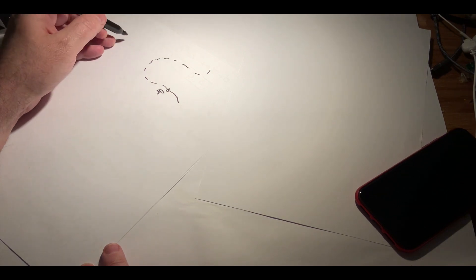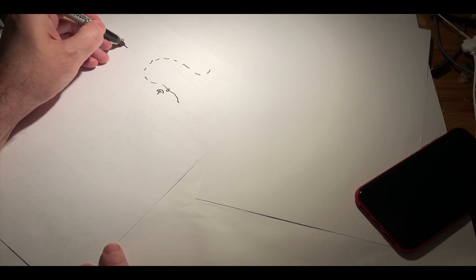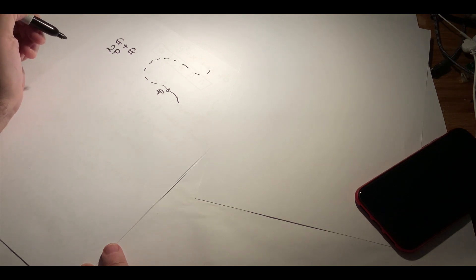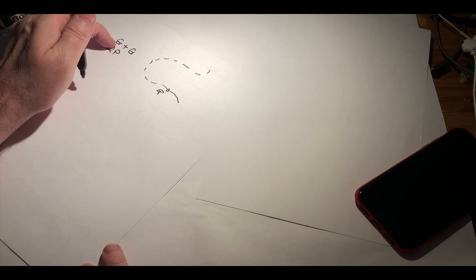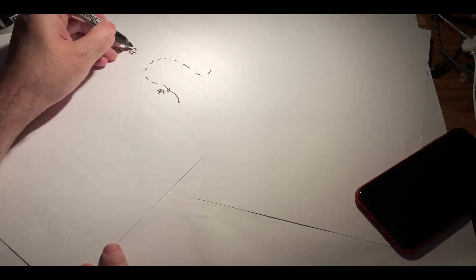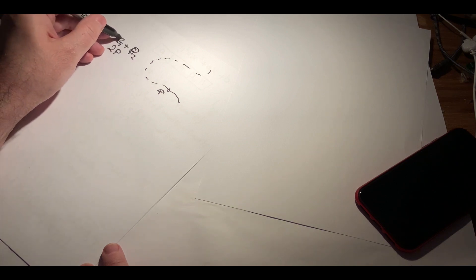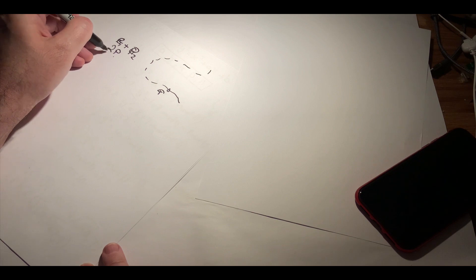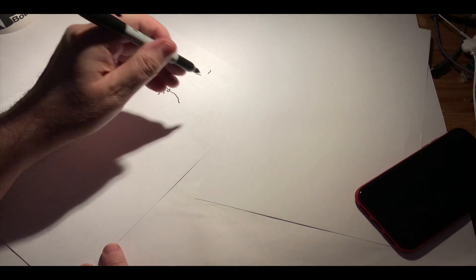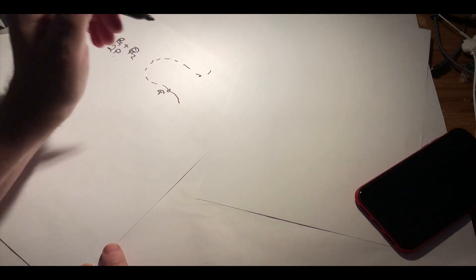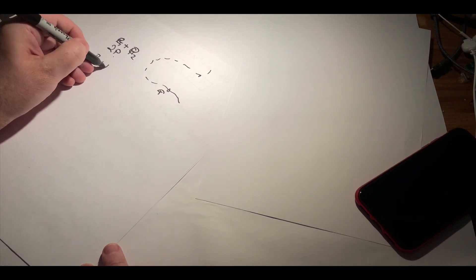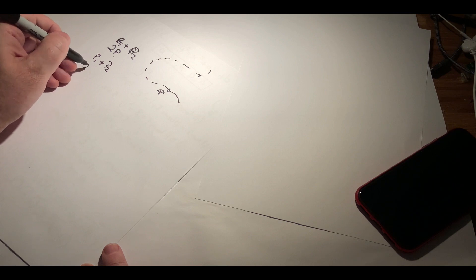The two main operations that we have with an elliptic curve are the point add and the point double. A point add is that we take one point and we add another point, so point 1 plus point 2. And the other operation that we have is to double the point. The thing with an elliptic curve is that whenever we add one point to another, we always get another point on the elliptic curve.